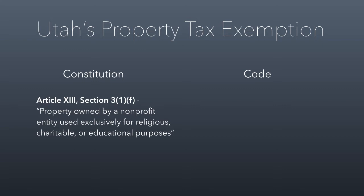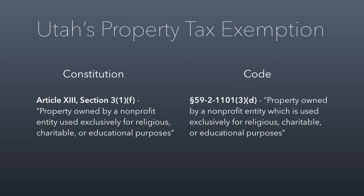In the Utah state code, property tax exemption includes property owned by a nonprofit entity which is used exclusively for religious, charitable, or educational purposes. The legislature essentially fully ratified in the code what was already in the constitution. So in the state of Utah, if you are a nonprofit and you use your property exclusively for religious, charitable, or educational purposes, then you don't have to pay property taxes on that property.